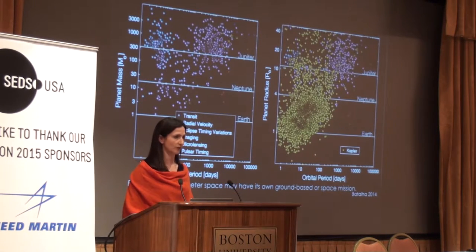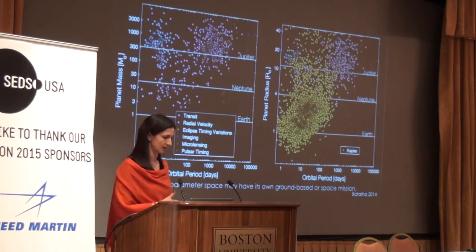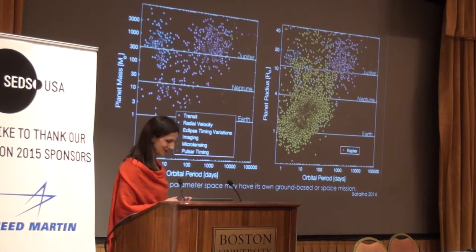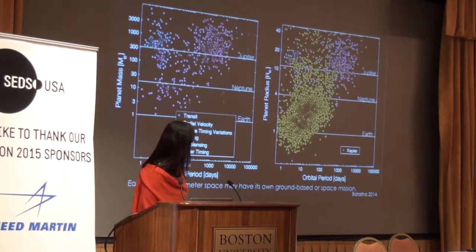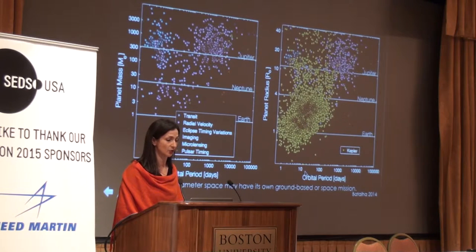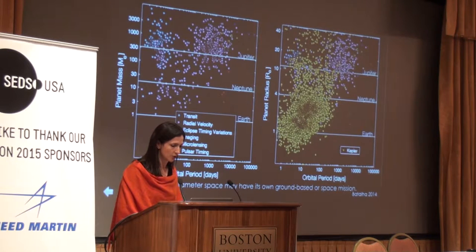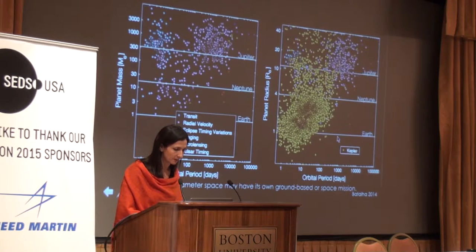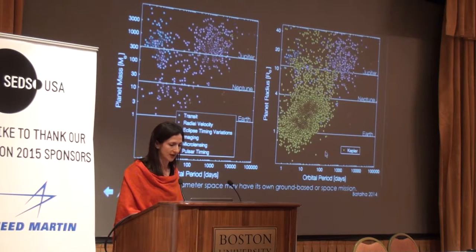Now I want to give you more of an engineering science summary. Here on the right panel, all the known planets are shown in terms of planet size and orbital period. This is a log-log plot, so it spans a tremendous space. Earth is listed at one Earth size; Jupiter is up here at ten times the size of Earth; Neptune is four times the size. Orbital period in days represents the year of the planet, and Earth would be here — we don't have any that are Earth-sized in Earth's orbit yet.